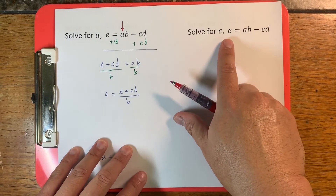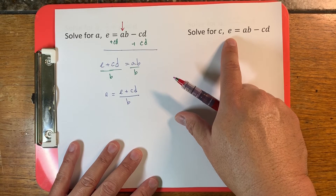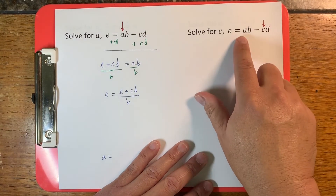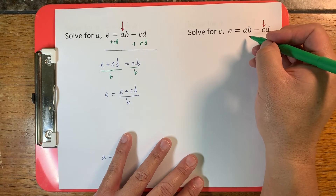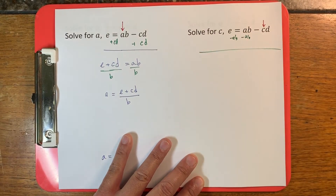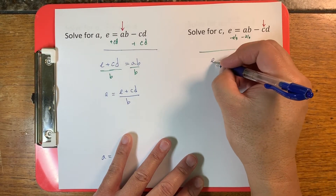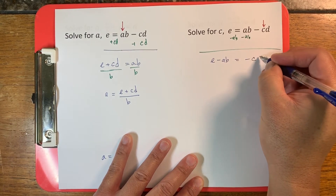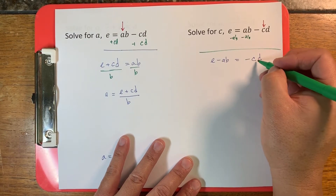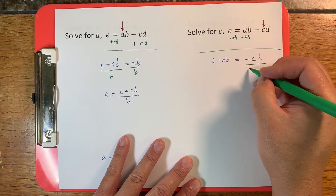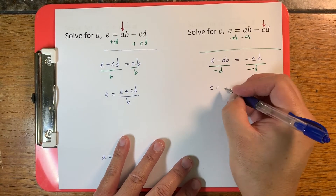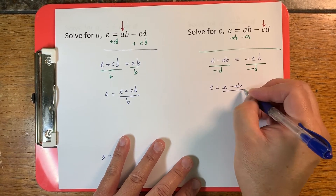Now we're starting from the same equation, but this time we want to solve for c. Previously we solved for a. Now the first thing we do is subtract ab from both sides, and we get e minus ab is equal to negative cd. Then, since c and d are connected by multiplication, the opposite operation is division. So I'm going to divide both sides by negative d, giving us c is equal to e minus ab divided by negative d.